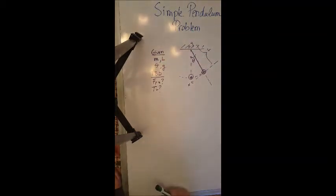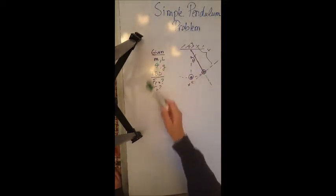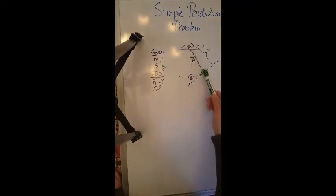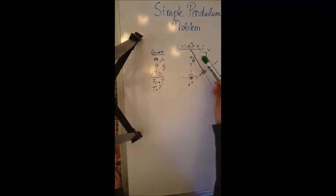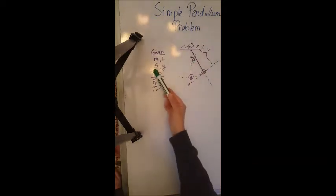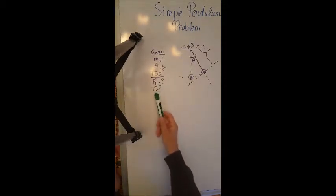In this problem we have an object of mass M attached to the end of a rod of length L that is going to oscillate in simple harmonic motion when it's displaced from the equilibrium position by an angle theta. We know the angle theta, we know the acceleration due to gravity, and we need to calculate the magnitude of the restoring force and the tension in the rod.